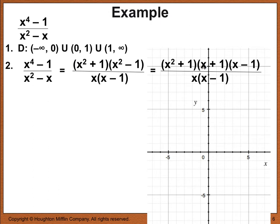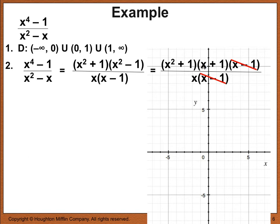Step 2 — simplify. x to the 4th minus 1 is a difference of squares: x squared plus 1 times x squared minus 1. The denominator factors as x times x minus 1. Then x squared minus 1 factors further as x plus 1 times x minus 1. Canceling the x minus 1 factors makes this function simpler, so the remaining steps will be easier.